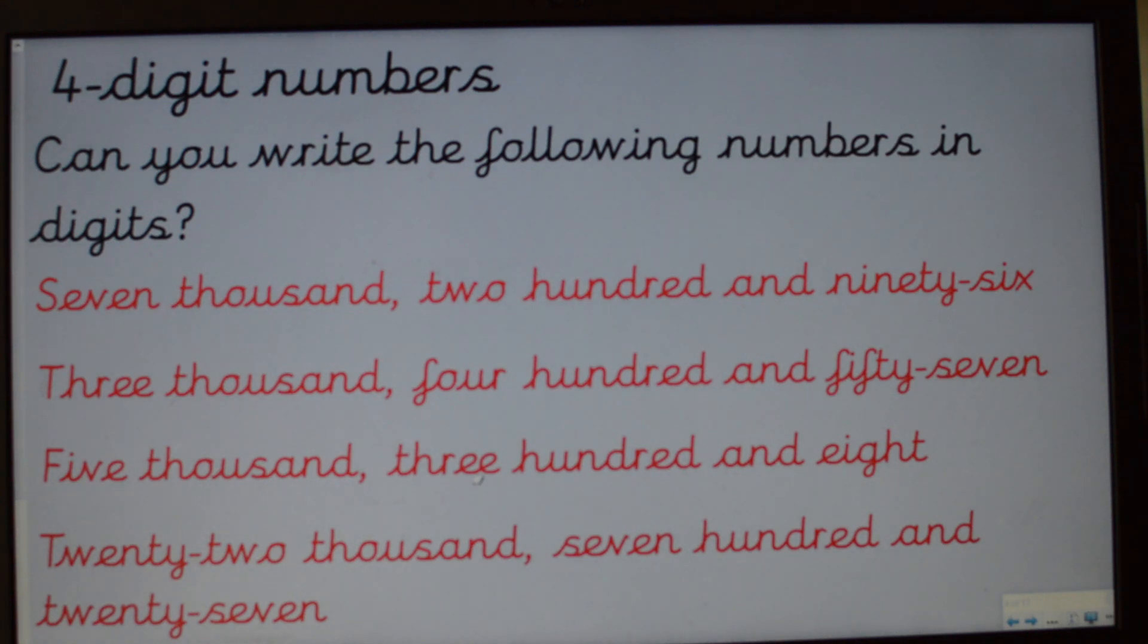So it's really important that you understand how to be able to read numbers as words as well as digits. So I've written four numbers up here and I'd like you to convert the words into digits. So the first one is seven thousand, two hundred and ninety-six. Can you write that number down? How about the next one? Three thousand, four hundred and fifty-seven. Have a go.